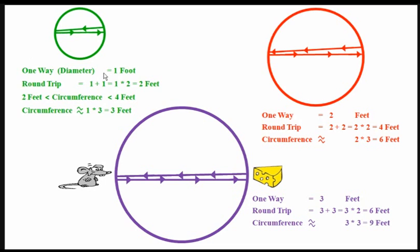We also know from before that the circumference is bigger than two feet — it's bigger than just going straight across the diameter back and forth. There's a neat way of writing this concisely in math. We say the circumference is bigger than two feet, and on the same line we can add that the circumference is less than four feet. The circumference is in between two feet and four feet. So we're going to split the difference and say the circumference is roughly equal to three feet.